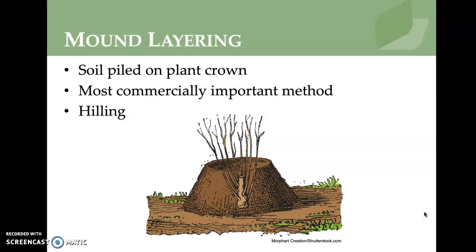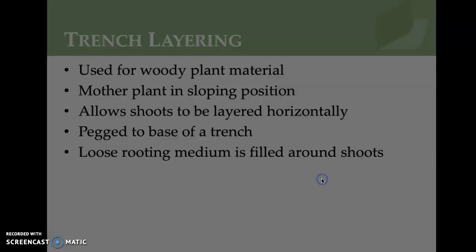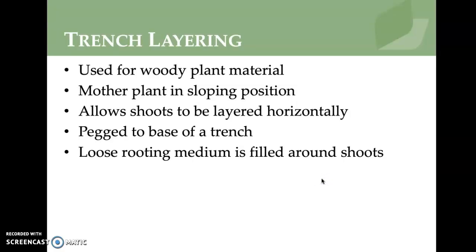Mound layering involves piling soil on a plant crown. It's the most commercially important method, also known as hilling, and the image shows soil piled on top to promote growth. Trench layering is used for woody plant material — the mother plant is placed in a sloping position, shoots are layered horizontally, pegged to the base of a trench, and loose rooting medium is filled around the shoots.